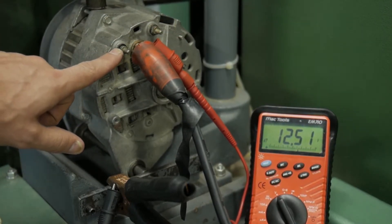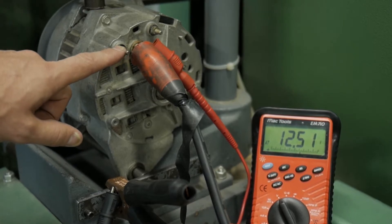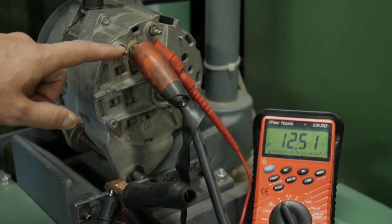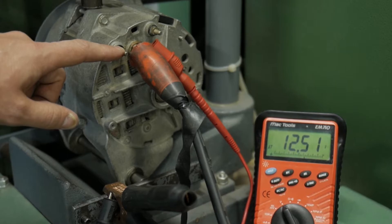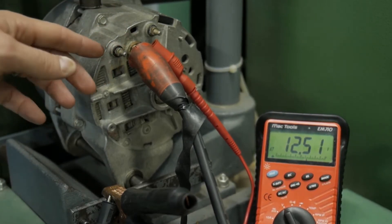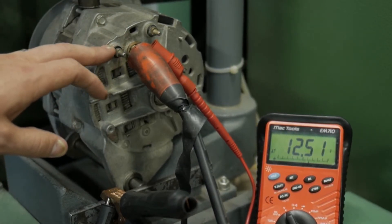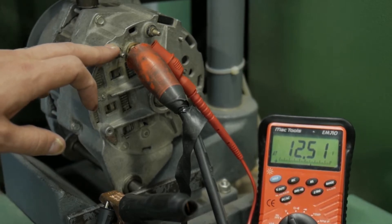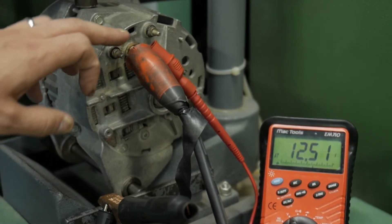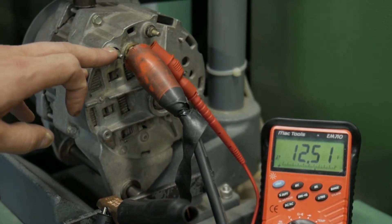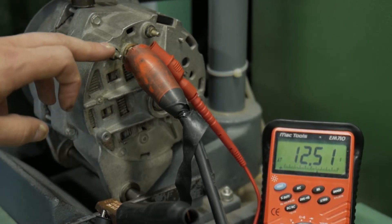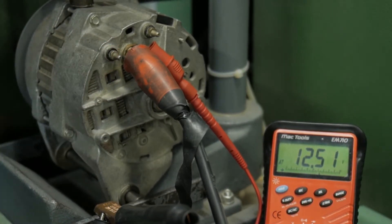That's the residual terminal to excite the rotor field, which will produce an output from the alternator. What's happened is the residual magnetism of the rotor has dissipated. We're going to reintroduce it, essentially bypassing the regulator and directly full-fielding this alternator.